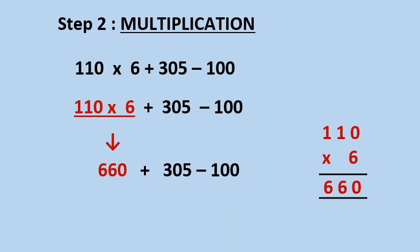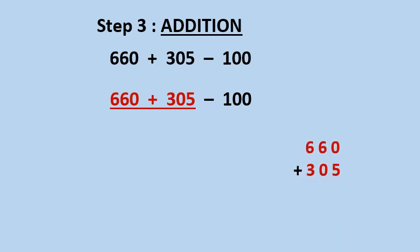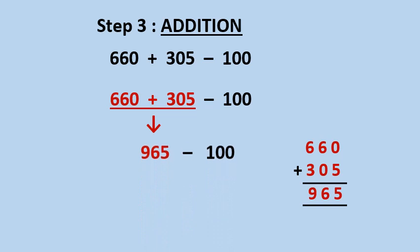Now the question is 660 plus 305 minus 100. Step number 3 is addition. Now we add these two numbers, 660 and 305. When we add 660 and 305, the answer is 965. We write 965 in place of 660 plus 305.